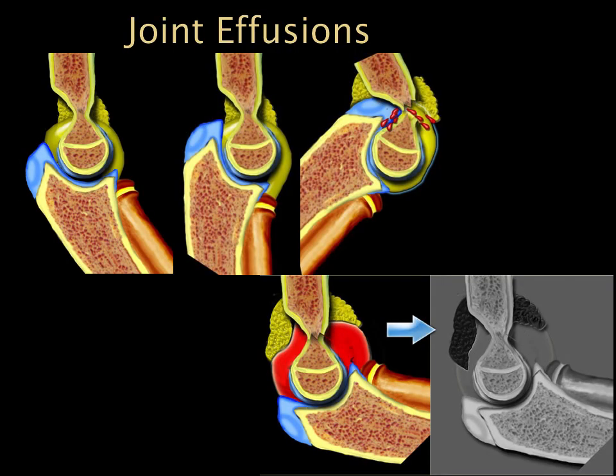Another important factor in evaluating elbow radiographs is looking for joint effusions. These diagrams give us an idea of what's actually happening — as the elbow is extended we can end up with a supracondylar fracture. Blood develops in the joint space, pushing up those fat pads — shown in yellow — anteriorly and posteriorly, which on corresponding x-ray images appear dark or black.